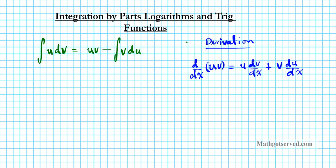Now let's multiply the entire equation by dx, which clears out the dx. That yields: d(uv) equals u dv plus v du.